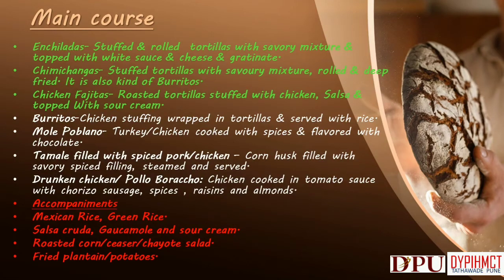Main course from Mexico: Enchiladas — stuffed and rolled tortillas with savory mixture, topped with white sauce and cheese and gratinated. Chimichanga — stuffed tortillas with savory mixture, rolled and deep fried; also a kind of burrito. Chicken Fajitas — roasted tortillas stuffed with chicken, salsa and topped with sour cream. Burritos — chicken stuffing wrapped in tortillas and served with rice. Mole Poblano — turkey or chicken cooked with spices and flavored with chocolate. Tamale — corn husk filled with spiced pork, chicken and savory spiced filling, steamed and served. Drunken Chicken or Pollo Borracho — chicken cooked in tomato sauce with chorizo sausage, spices, raisins and almonds.